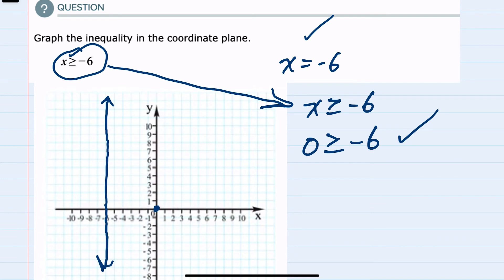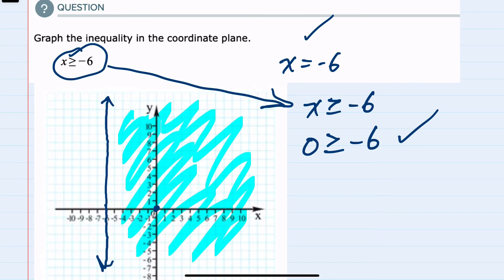So we have our line, and we tried the test point 0, 0, and it worked. So I would want to shade everything on the side of the line that is the same side as the test point. If the test point wouldn't have worked, I would shade the opposite side of that line.